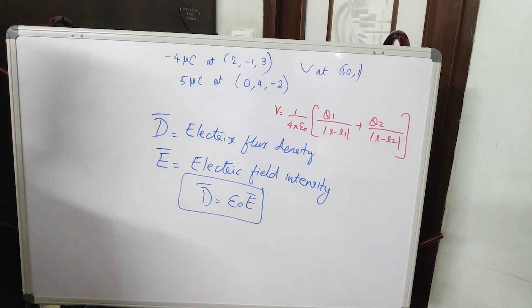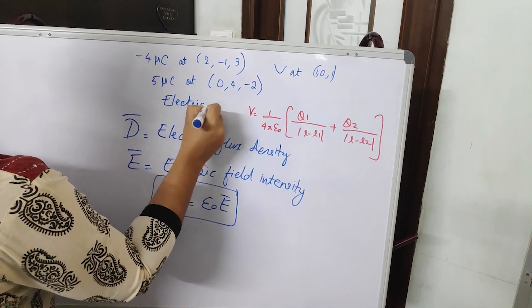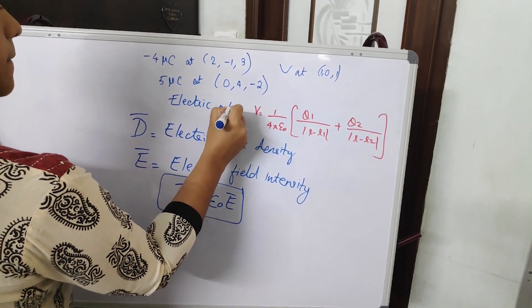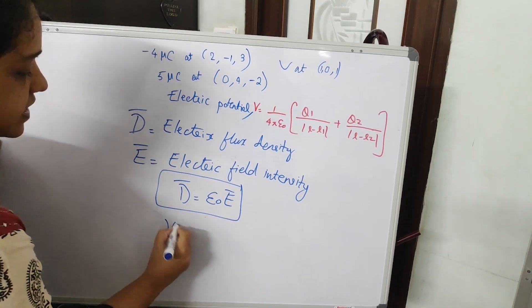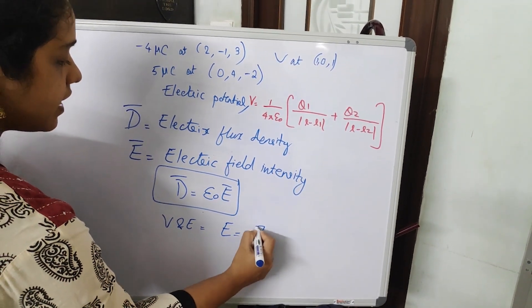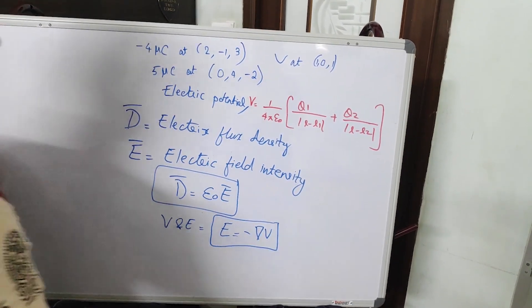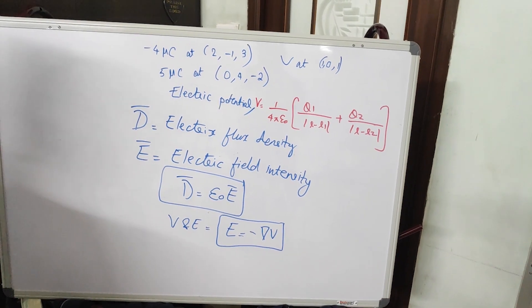D and E are vectors whereas this v, that is electric potential v, that is a scalar quantity. And how you connect v and E? The relation is E is minus del of v, that is electric field intensity is the negative gradient of electric potential.